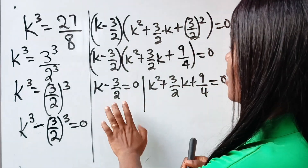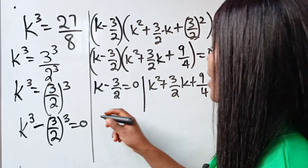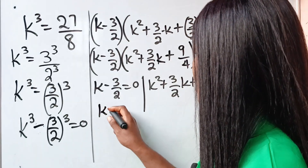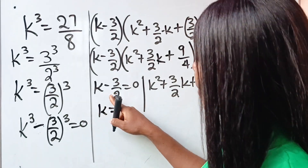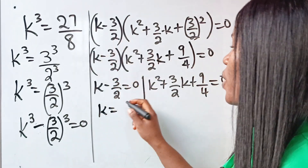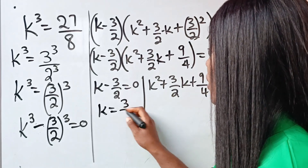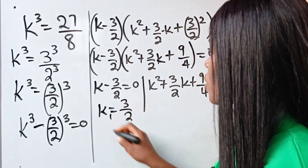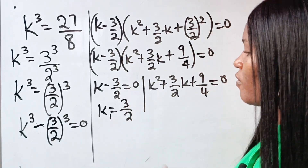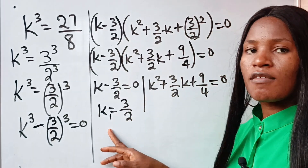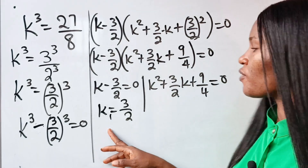So from the left factor, we can see that k is equal to 3 over 2 — the minus 3 over 2 crosses to become 3 over 2. So this is the first value of k.